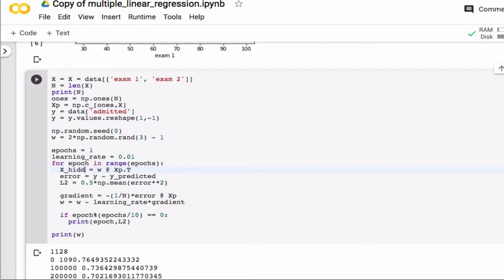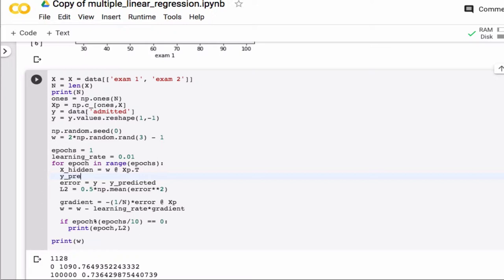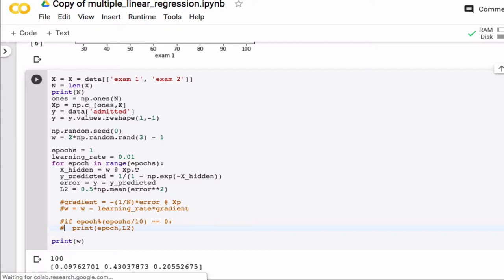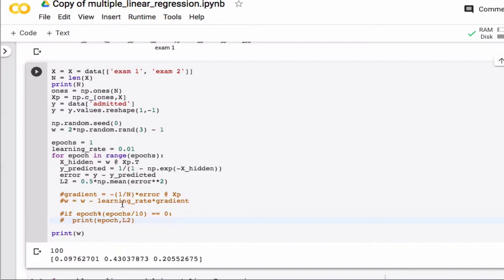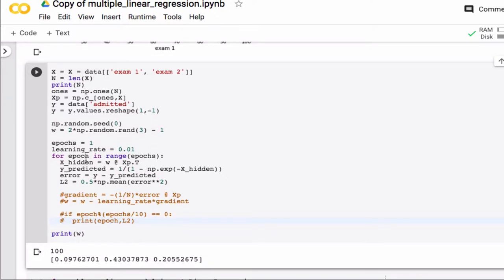So my yPredicted now I'm going to call x hidden. And then I have a second step now where yPredicted is my activation function. So that's one divided by one minus, and then I need the exponential function. And that was minus x hidden. Before we get to the gradient, let's see if I get any error messages. No. So this looks like that was successful. All I need to do now is add those extra lines.